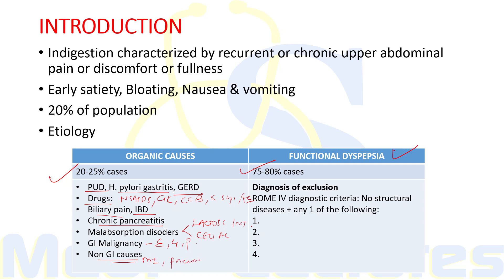These are all the organic causes which can present with dyspepsia features like chronic upper abdominal pain, discomfort, early satiety, and bloating. Functional dyspepsia, as we have discussed, accounts for the majority of cases and is a diagnosis of exclusion — we have to rule out organic causes first.